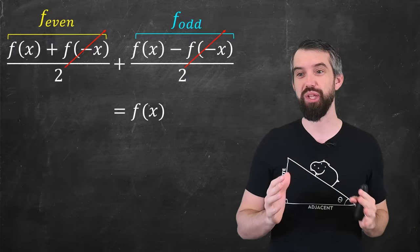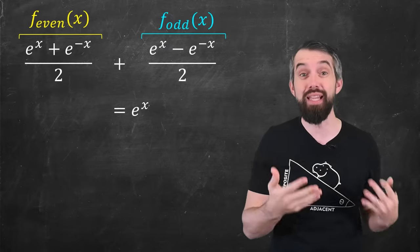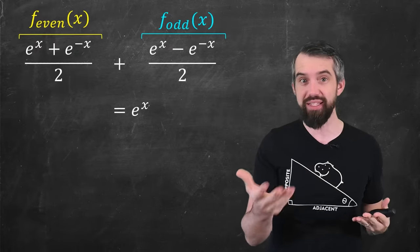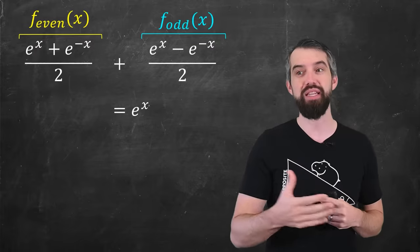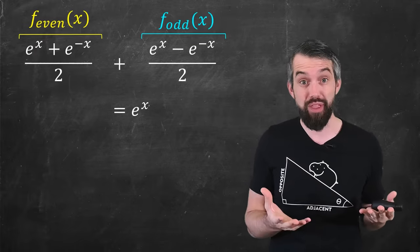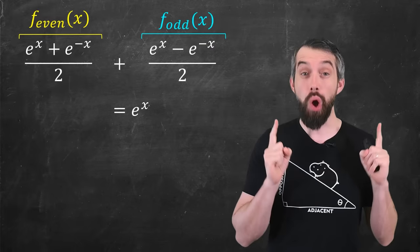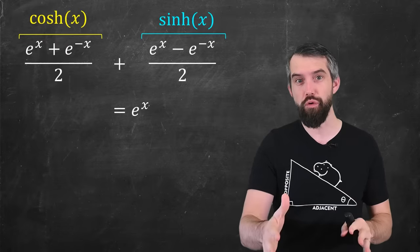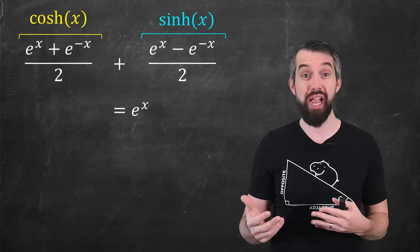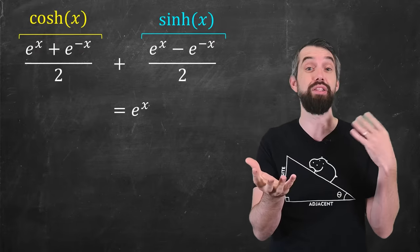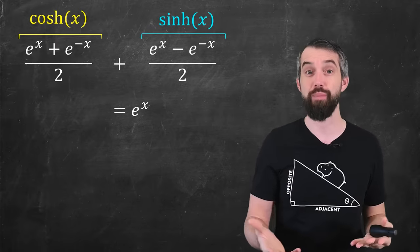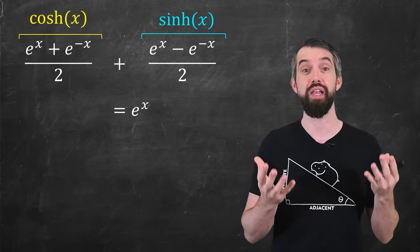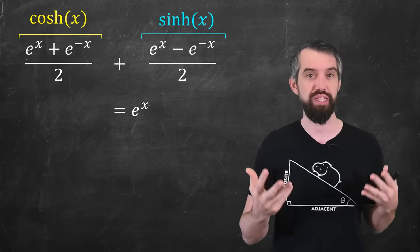All of that preamble was for this particular moment. Let me plug in the specific function e to the x. In this case, f-even is e to the x plus e to the minus x over 2, and f-odd is e to the x minus e to the minus x divided by 2. These are even and odd functions, and their sum is just e to the x. I am going to call these hyperbolic cosine and hyperbolic sine. So from an analytical perspective, hyperbolic cosine and hyperbolic sine are just the even and odd components of the exponential function.